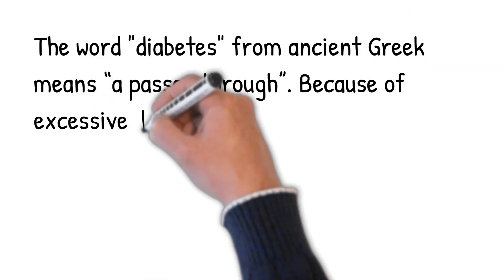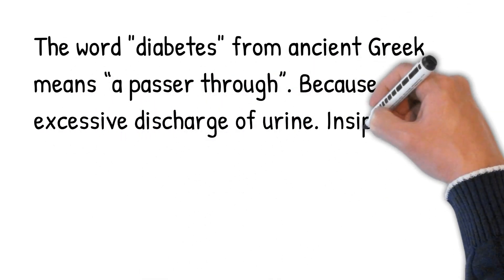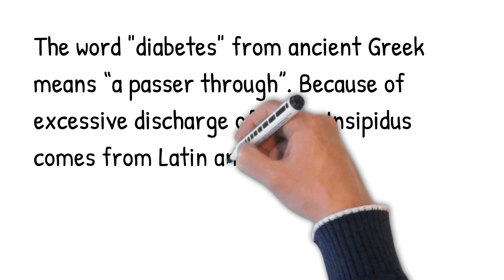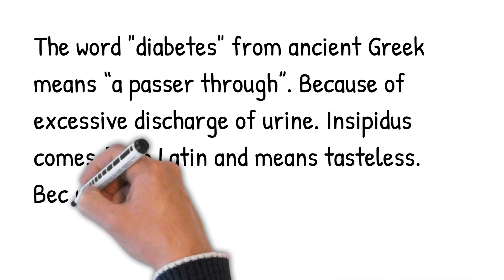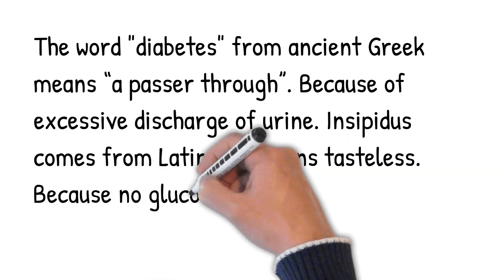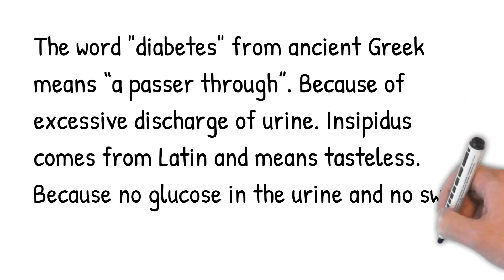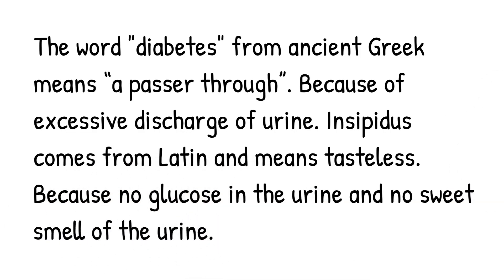The word diabetes from ancient Greek means 'a passer-through,' because of excessive discharge of urine. Insipidus comes from Latin and means 'tasteless,' because there is no glucose in the urine and no sweet smell of the urine.